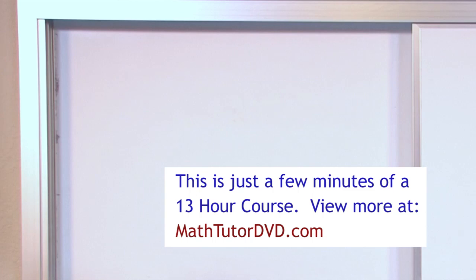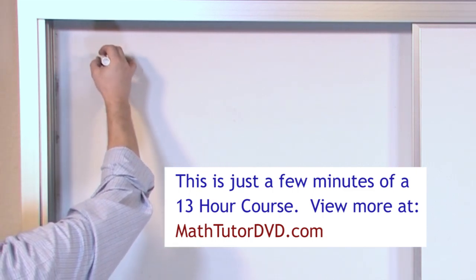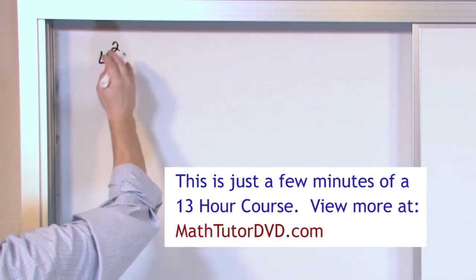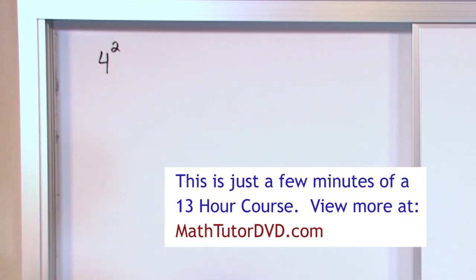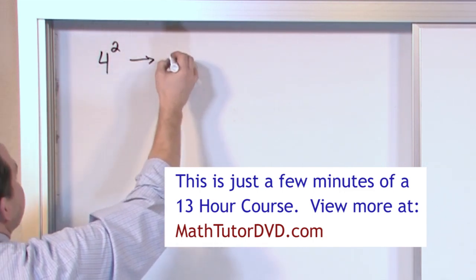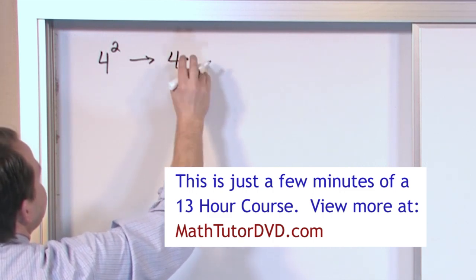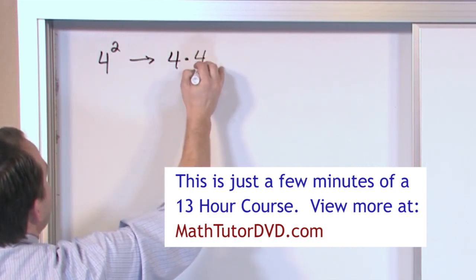If you see something in a book that looks like this, four with a two on the top, this is an exponent. The two is what we call an exponent. And it's a shorthand way of writing this: four times, the dot is times, four.